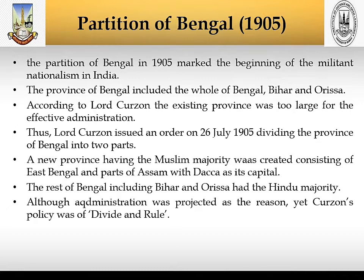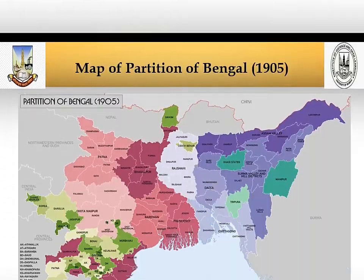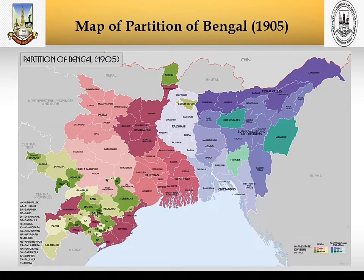A new province having a Muslim majority was created, consisting of East Bengal and parts of Assam, with Dhaka as its capital. This was the clear vision of Lord Curzon's divide and rule policy. The rest of Bengal including Bihar and Orissa had a Hindu majority. Although administration was projected as the reason, Curzon's policy was to divide and rule. You can see the map of the Partition of Bengal 1905 over here, clearly depicting how Bengal was divided into two.